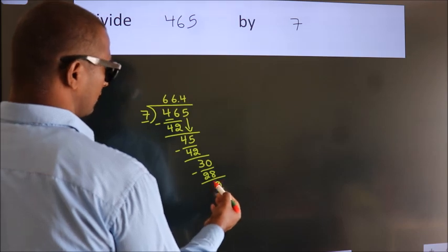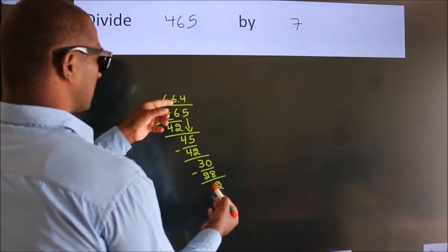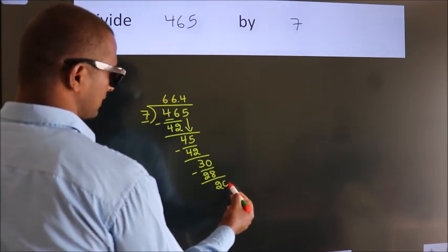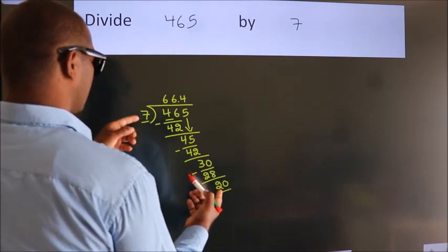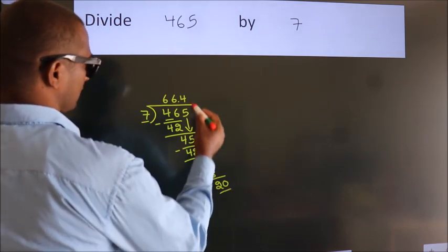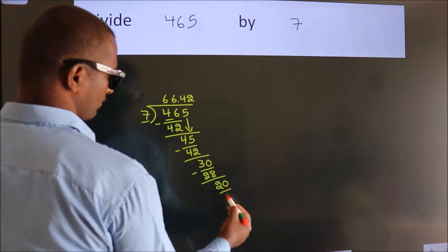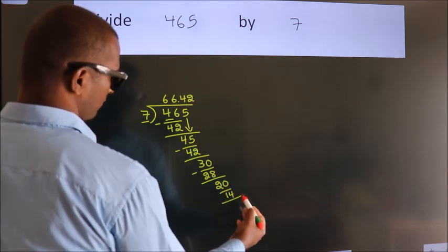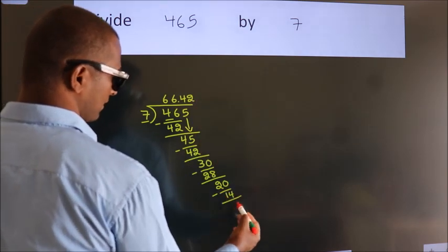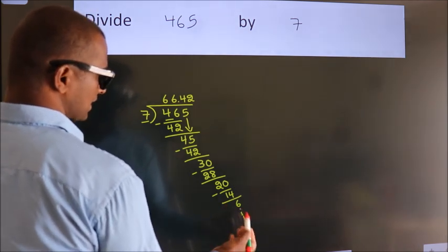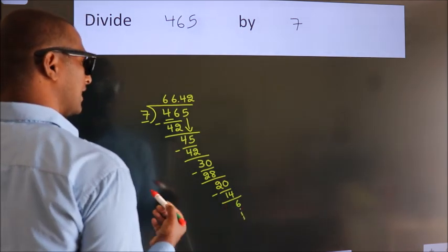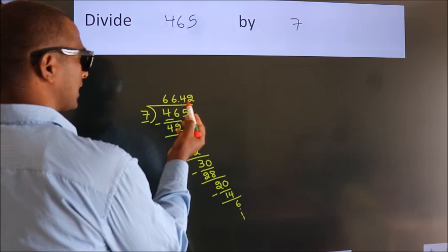After this, we already have the decimal, so directly take 0. So, 20. A number close to 20 in the 7 table is 7×2, 14. Now, we subtract. We get 6. And you continue the division. It is enough if we do up to 2 decimal places.